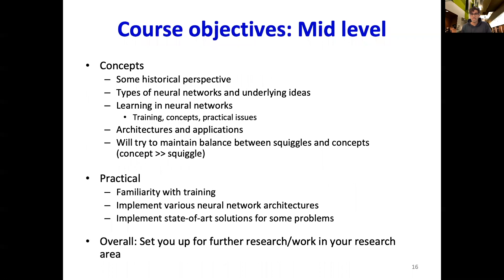The concepts this course will cover include some historical perspective on the field of deep learning, different types of neural networks and their underlying ideas, how learning takes place in neural networks, including concepts to do with training and practical issues that arise when training neural networks. You will also learn about several architectures and applications, and be able to identify the best architecture given a particular task. The course maintains a healthy balance between theory and implementation. On the practical side, you will develop close familiarity with training your own neural networks, implementing various architectures, and implementing state-of-the-art solutions. Later homeworks will involve reading current literature in deep learning and implementing cutting-edge research.